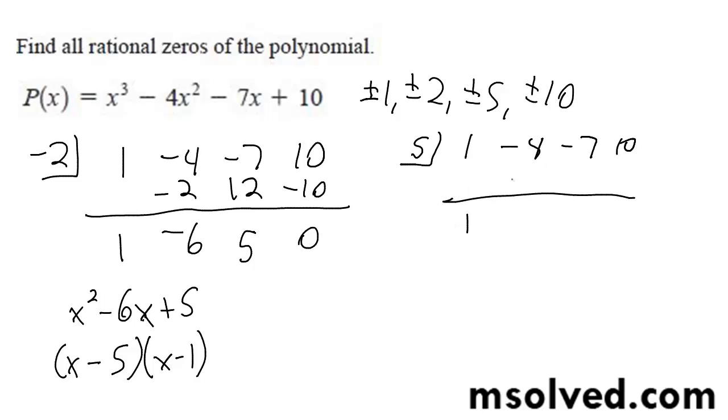So I bring down 1 times 5, gives me 1, gives me 5, negative 2, negative 10, 0. So there's 0 remainder, which means it works, so I'm going to try 1.